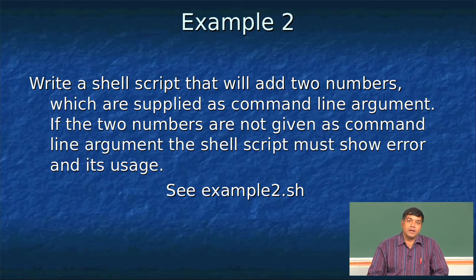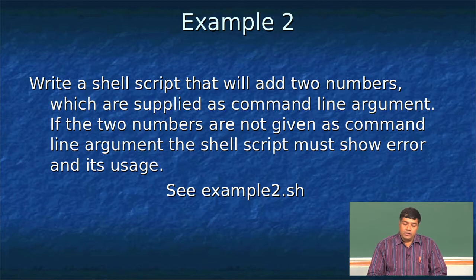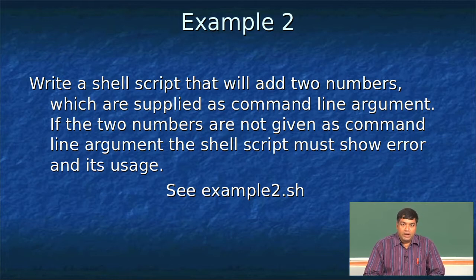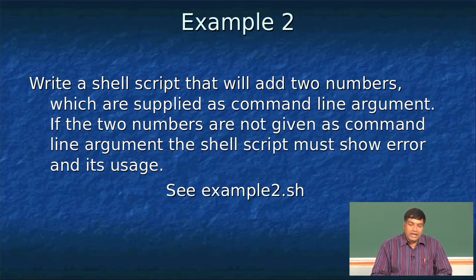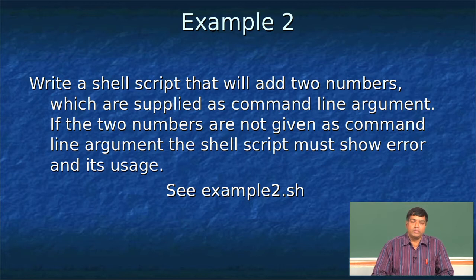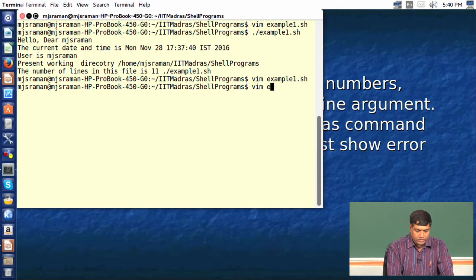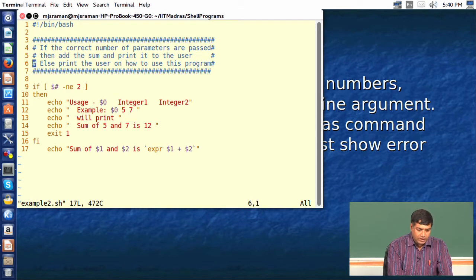We have two tasks: first, if the user does not invoke the shell script properly, throw an error and tell the user how to use the command. Second, if the user gives the input parameters properly, add the two numbers and print the results. This process of validating inputs is very important — not only in shell scripting but in any programming language. It is referred to as 'garbage in, garbage out.' Let us take a look at this example shell script.